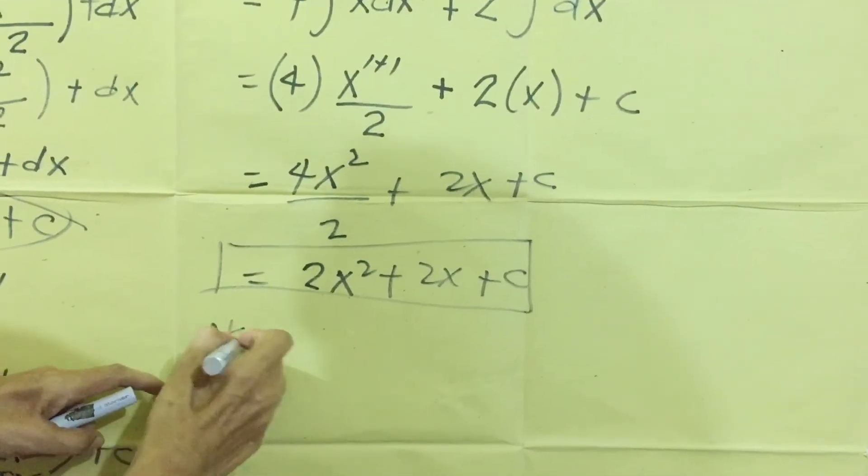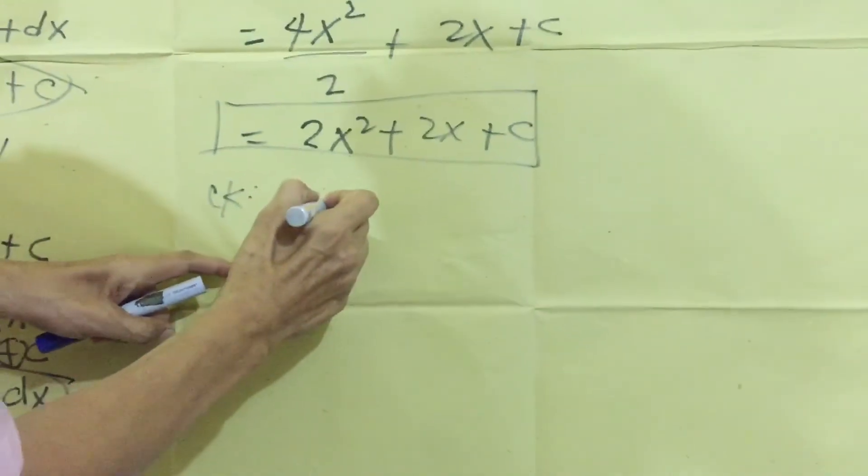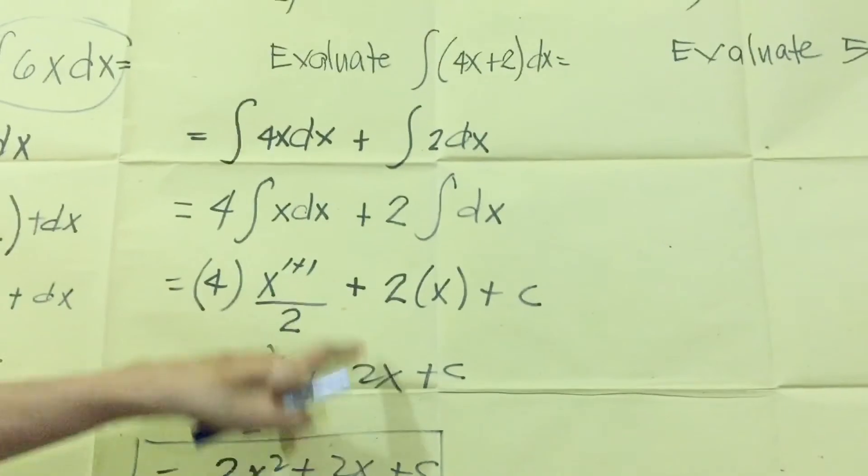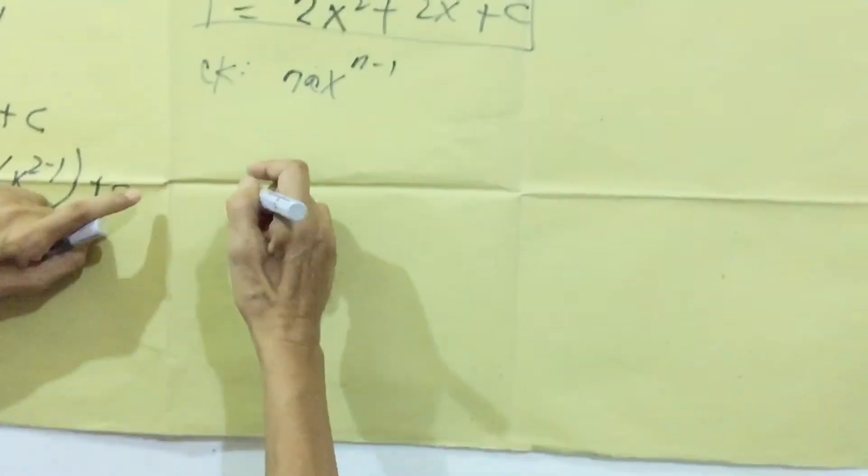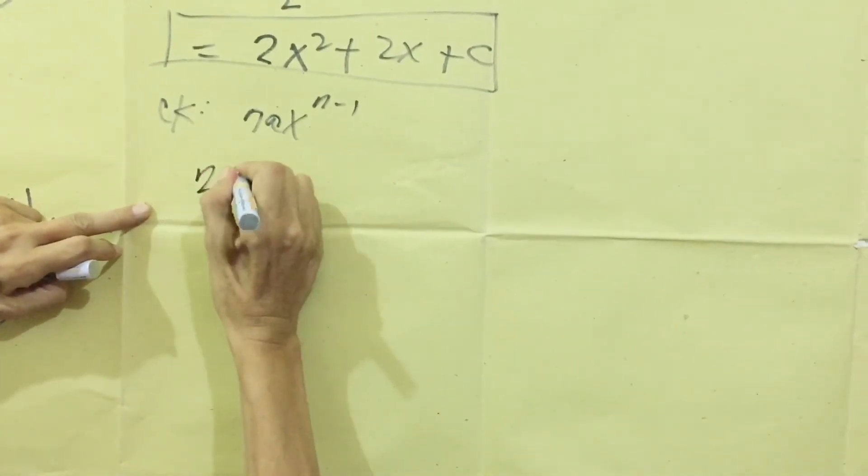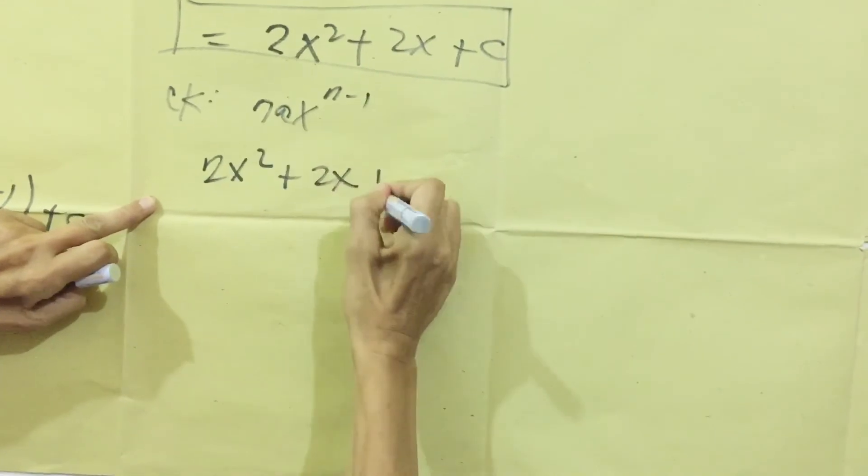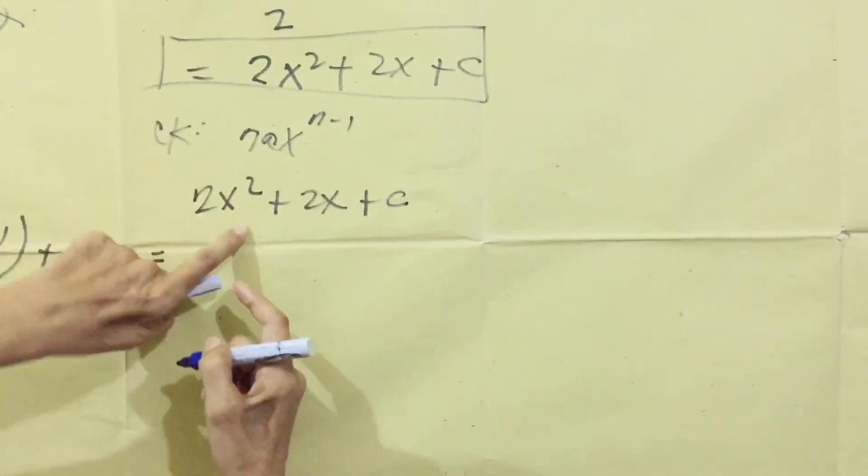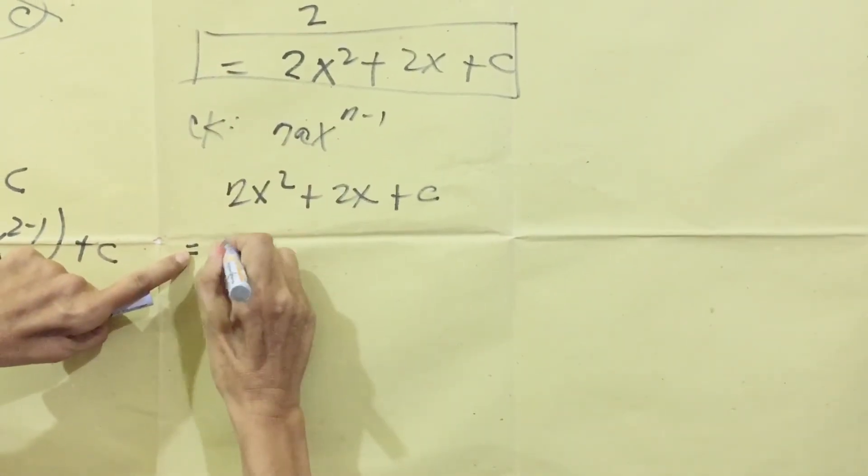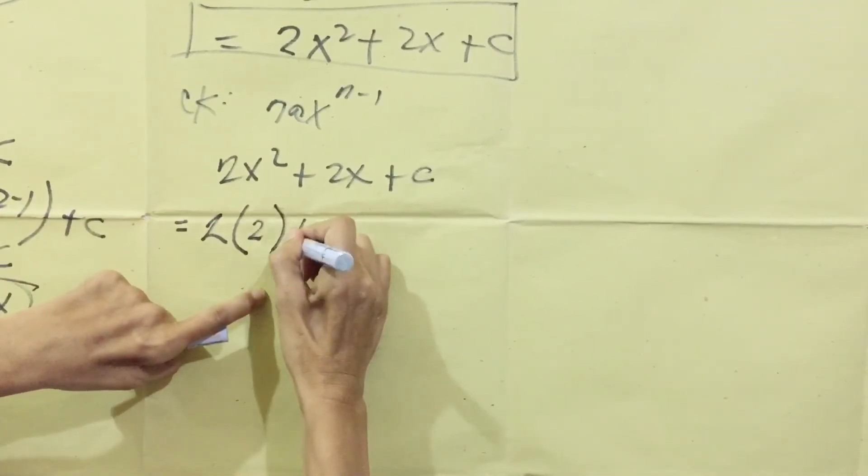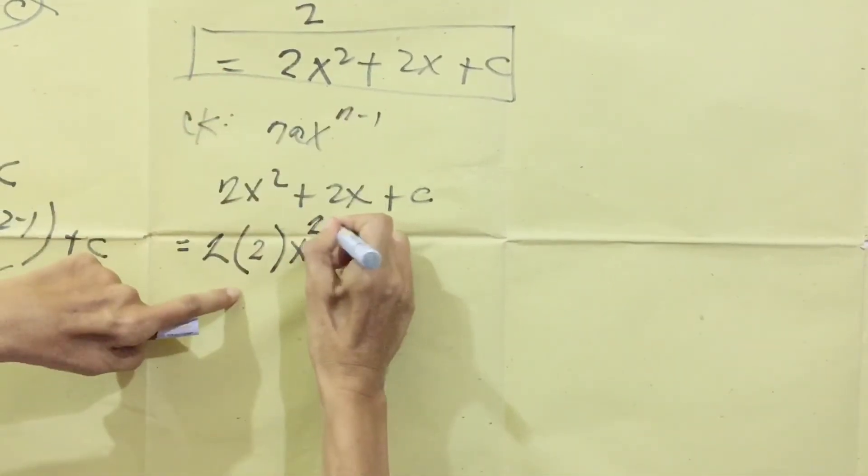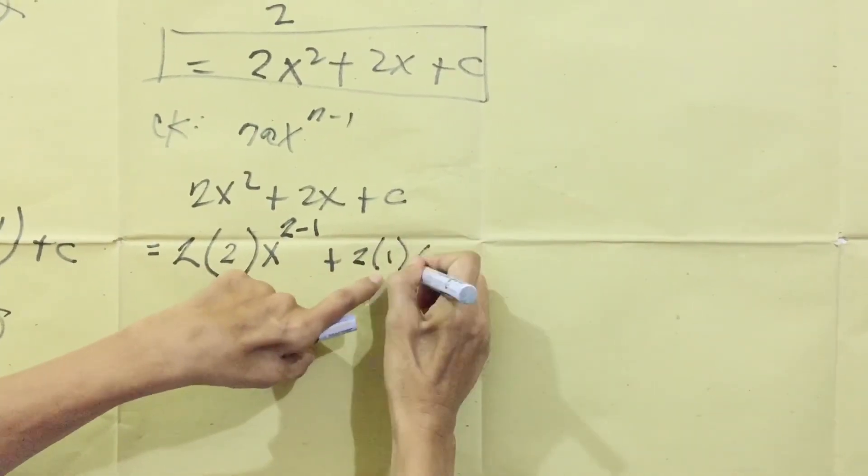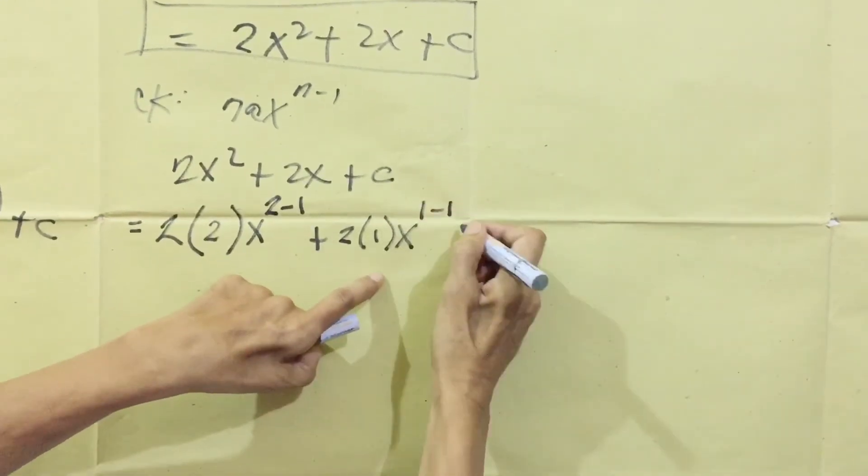We are going to check using the derivatives formula. We have n A X to the n minus one. The derivative minus one, the integration is plus one. We have to write our answer first. We have two X squared plus two X plus C equals exponent. The exponent is two. Then the numerical is two. Then X, exponent is two, minus one, plus two times the exponent one, variable X, one minus one, plus the constant.